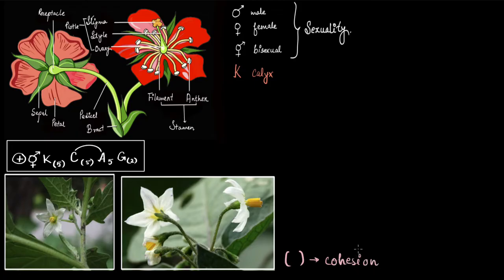Next we have C, which stands for corolla — the petals. This flower has five petals, and again they are placed under brackets, which means they are all attached to each other.